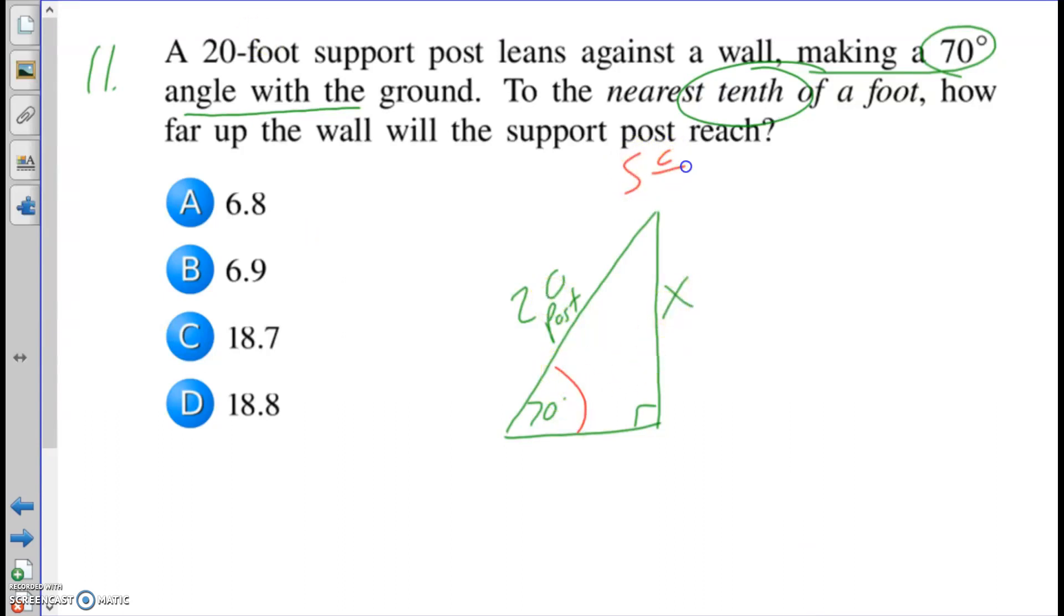I have only one side. I have an angle finding another side. We're dealing with trig. Sine is opposite over hypotenuse. Cosine is adjacent over hypotenuse. And tangent is opposite over adjacent. From the 70 degrees that we're going to use, x is opposite. It's across the triangle. The post here is opposite the 90-degree angle, which makes it the hypotenuse. I'm working with opposite hypotenuse. I'm working with sine.